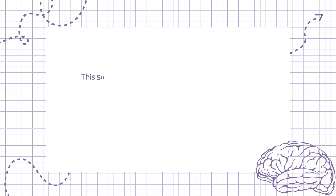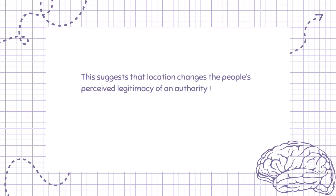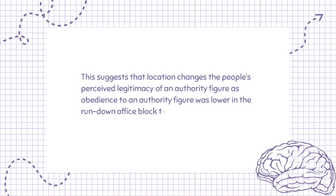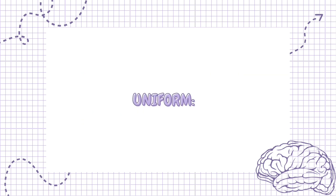This suggests that location changes people's perceived legitimacy of an authority figure, as obedience was lower in the run-down office block than at the well-respected Yale University.